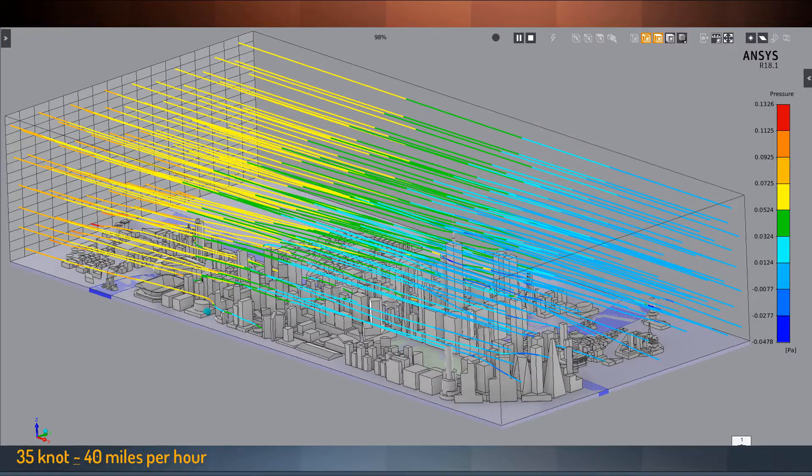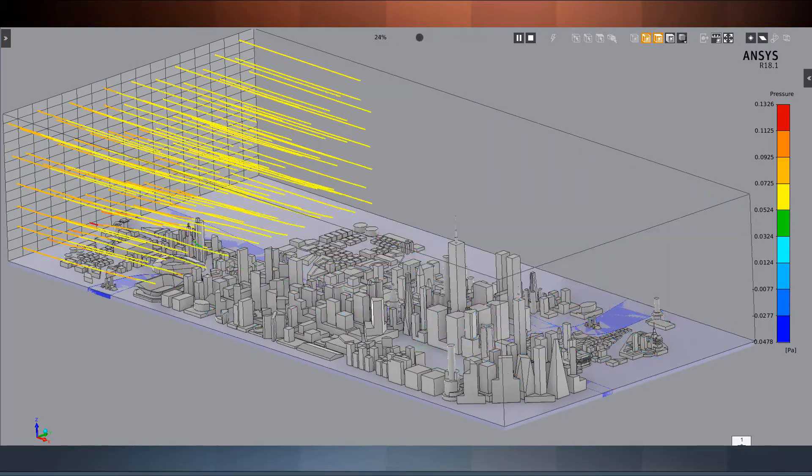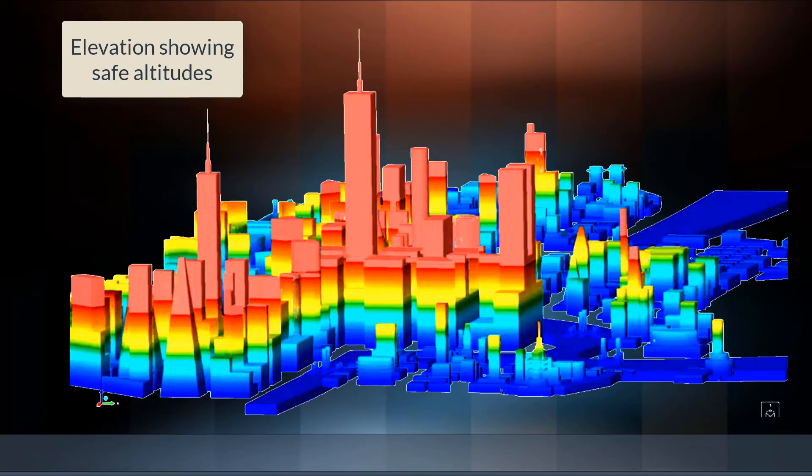Airflow streamlines and contour plots in ANSYS AIM predict wind pressures, patterns, and direction. Shown here is a color-coded altitude for skyscrapers. Red zone represents the maximum flying altitude for the drone, which has to pass around obstacles to stay below 400 feet.